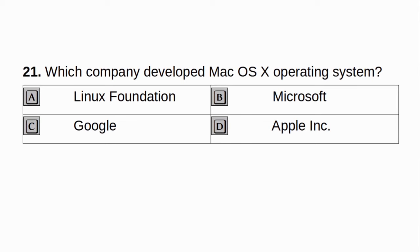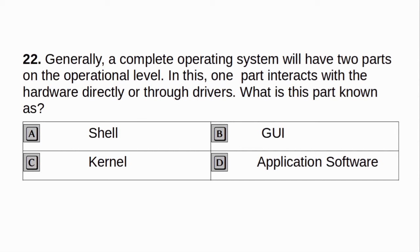Which company developed Mac OS X operating system? a. Linux Foundation. b. Microsoft. c. Google. d. Apple Inc. Answer: d. Apple Inc. Generally, a complete operating system will have two parts on the operational level. One part interacts with the hardware directly or through drivers. What is this part known as? a. Shell. b. GUI. c. Kernel. d. Application software. Answer: c. Kernel.